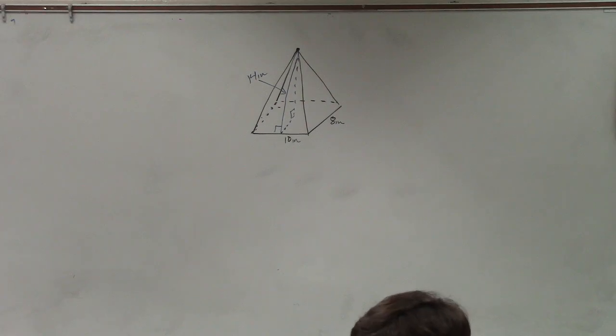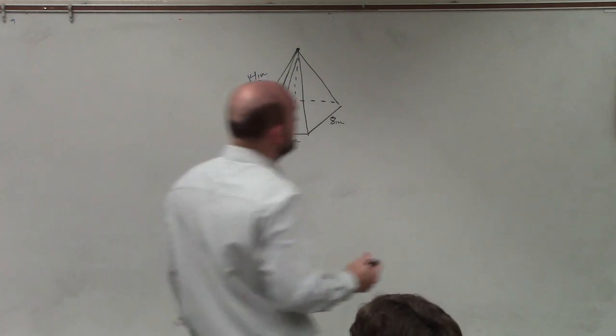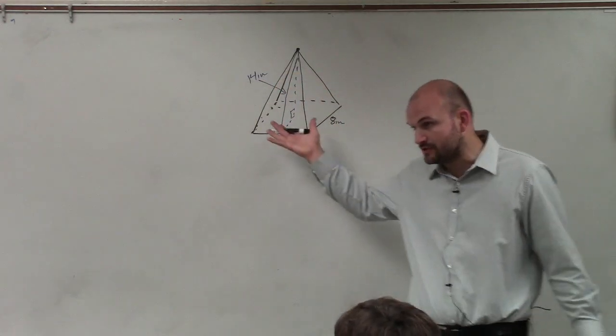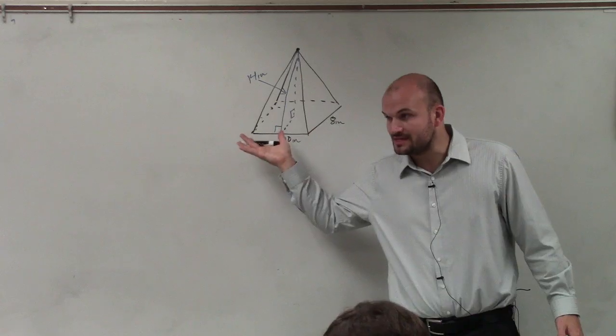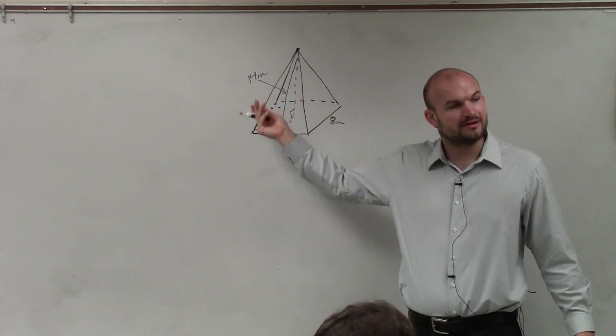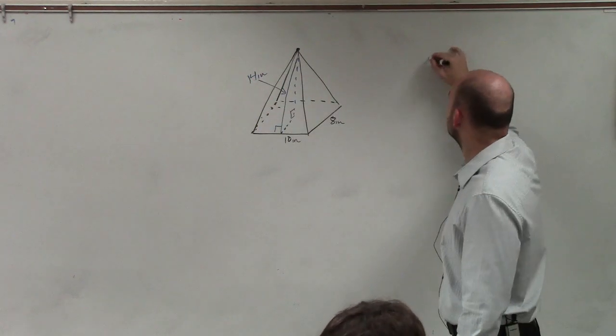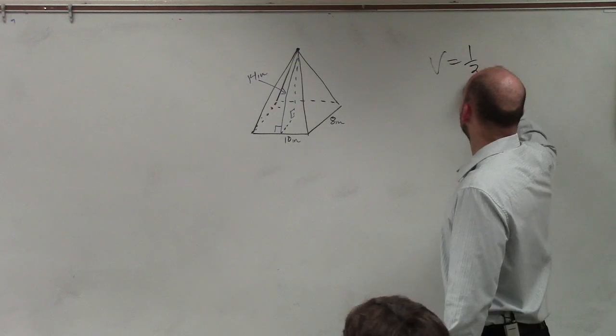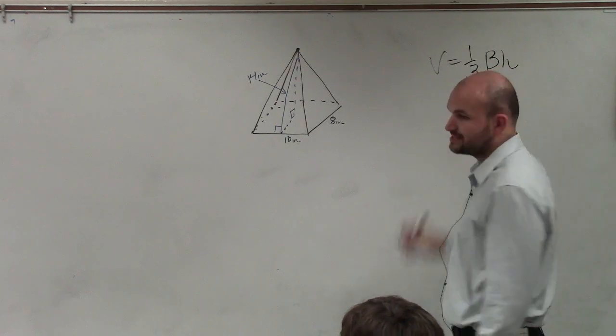So on this problem, what we have is we're trying to find the volume of this pyramid. Now remember, the volume for a pyramid that has a regular base that approaches a point, the volume is going to be one-third base times height.